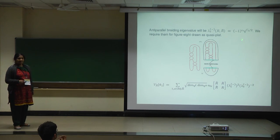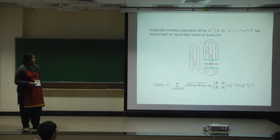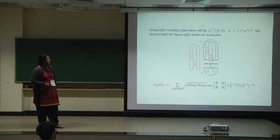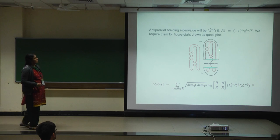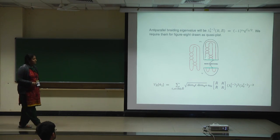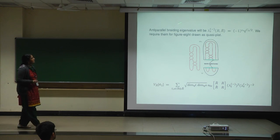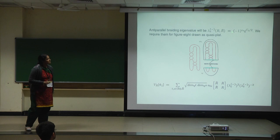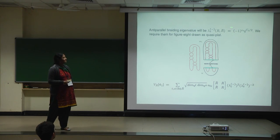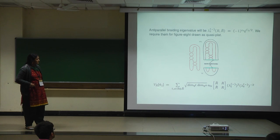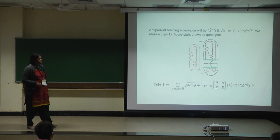For the figure-eight knot, the same diagram can be drawn as a quasi-plat: it is a kind of closure and a plat. You perform braiding in the middle two strands, then go from the middle to the side using the duality matrix. The orientations are anti-parallel, giving anti-parallel eigenvalues in standard framing. There are frame corrections to enforce topological equivalence of knots, and with this we obtain the invariant for the figure-eight as a polynomial in variable q.